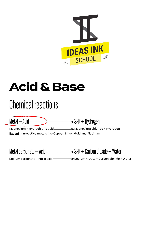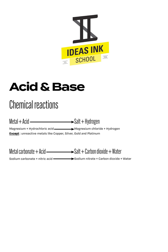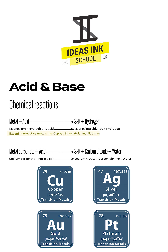When a metal reacts with an acid, a salt and hydrogen gas are produced. For instance, the metal magnesium reacts with hydrochloric acid to produce magnesium chloride and hydrogen gas. A quick note: not all metals can react with dilute acids. Metals like copper, silver, gold, and platinum are too unreactive to react with acids.